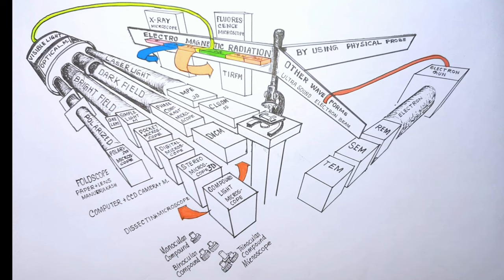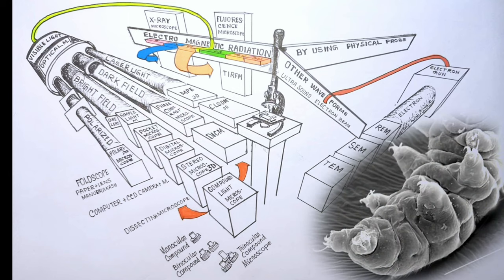Whereas, in case of a SEM, a beam of electrons scans the surface of a sample. The interaction of electrons with the material triggers the emission of secondary electrons. These secondary electrons are captured by a detector which forms an image of the surface of the sample.